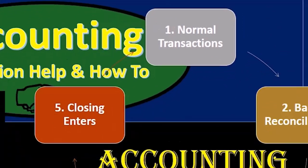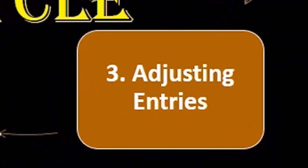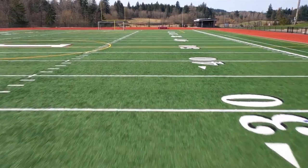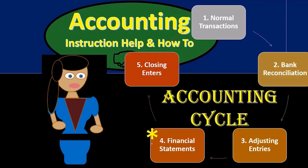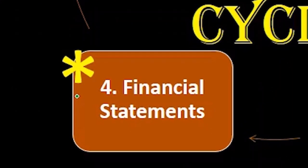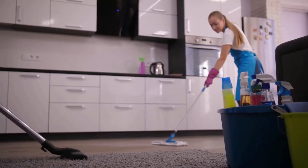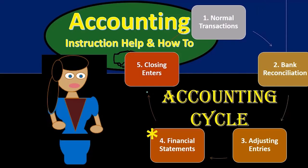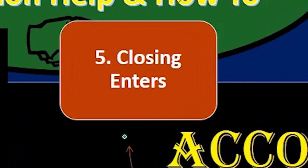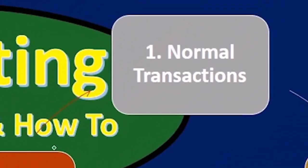Once the adjusting entries have been done we can finally make the financial statements — this is the end goal. We have an asterisk here because this is the end product we're really looking for. This is what external users of the financial statements, and most managerial accounting reports, are wanting. But notice it's step four of five — it's not the end, although it's the main event. We still have the cleanup, the closing process, as our final step. We'll close things up to get ready for this whole system to start again.